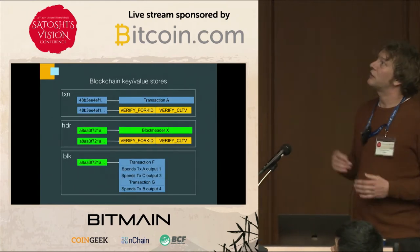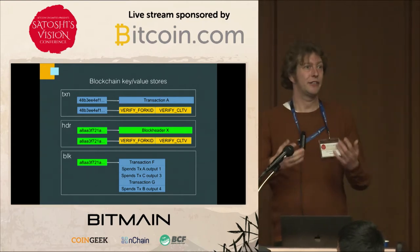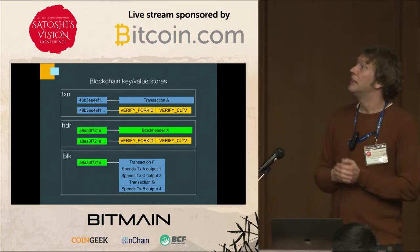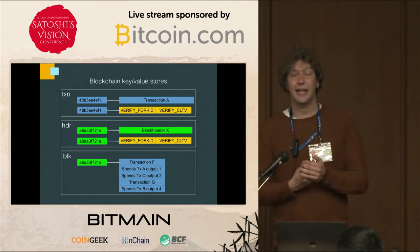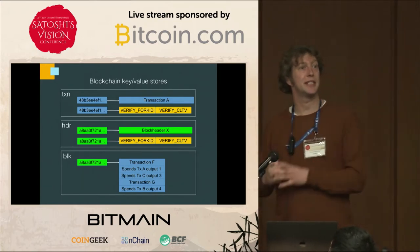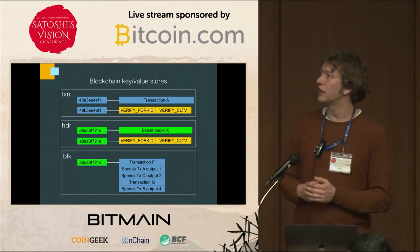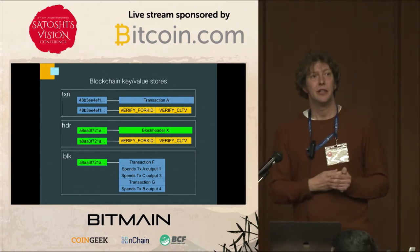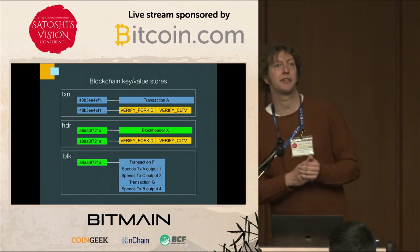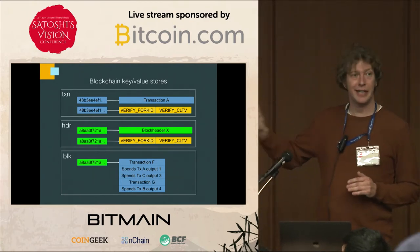We have one key-value store that stores transactions per hash and stores for each transaction its validity state — which rule set it is valid to. We have one store that stores the headers and for each header its validity state. And we have one store that stores the content of blocks — which transactions are in a block. For this last key-value store, we use an interesting format where we store each transaction as an index into our transaction database, and for each input of the transaction we store an index to the output it spends — which will be useful.